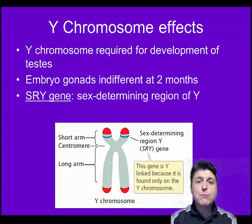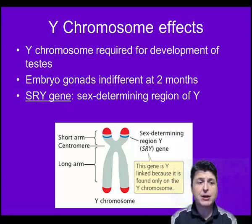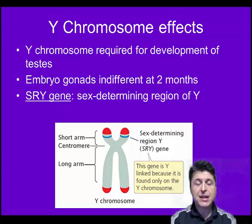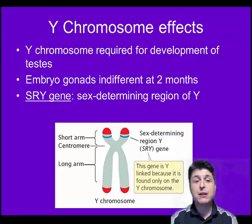Up to two months, the embryonic gonads are indifferent — they can't be distinguished between male or female. On or about this time, a region of the Y chromosome containing the SRY gene is going to be activated. The activation of those genes is going to influence the expression of other genes within the genome of that individual, which is going to lead to their development as a genetic male.